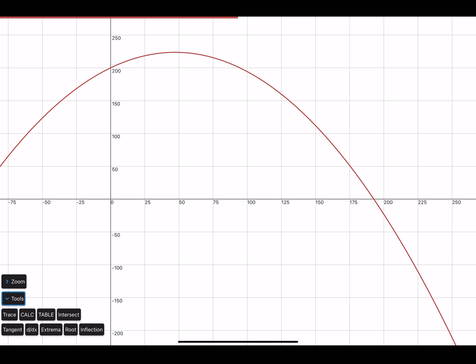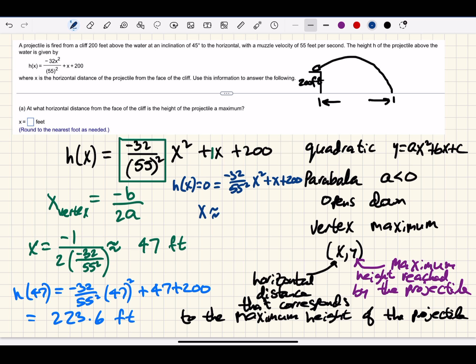Since we are asked to estimate this value, we could use a graphing utility to find this value. By graphing the function -32/(55²) × x² + x + 200, we could find the point where the graph meets the x-axis. The x coordinate is 193 if we round to the nearest foot. So the horizontal distance traveled by the projectile at the point that it strikes the water would be approximately 193 feet.